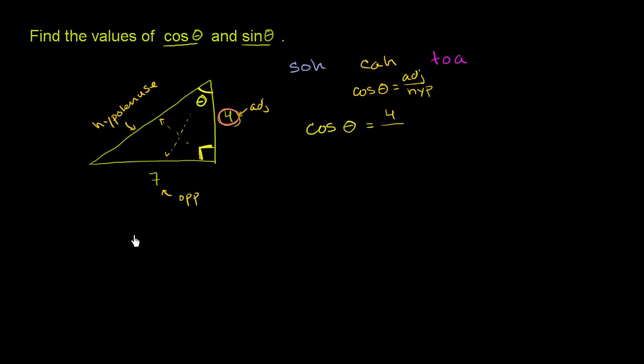So we have 4 squared plus 7 squared is going to be equal to H squared. So 4 squared is 16, 7 squared is 49, plus 49 is going to be equal to H squared. And let's see, 16 plus 50 would be 66, 16 plus 49 is 65. So this right over here is 65.